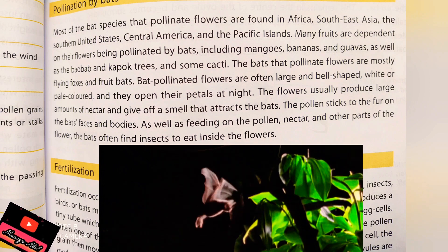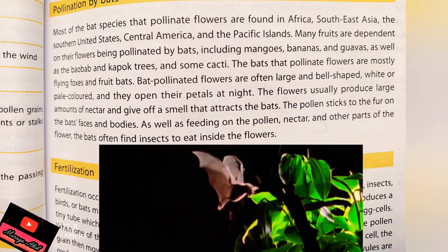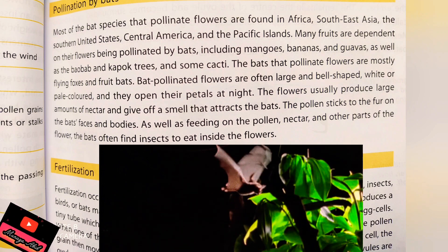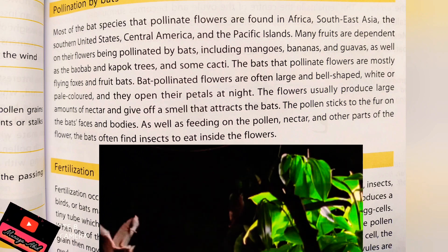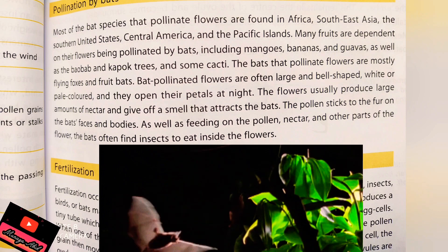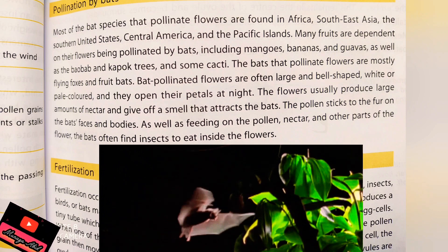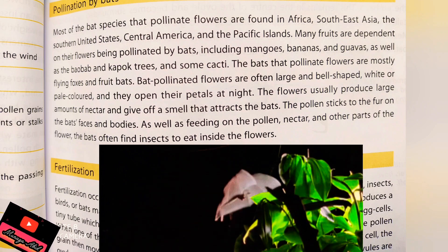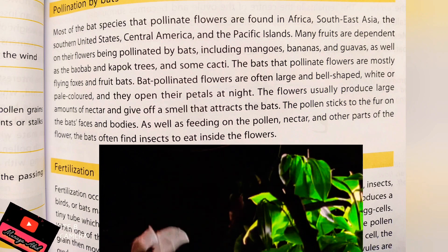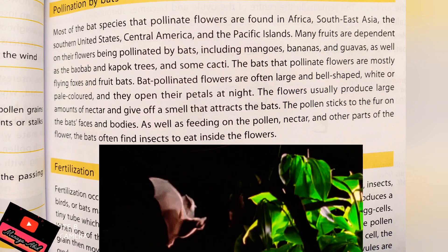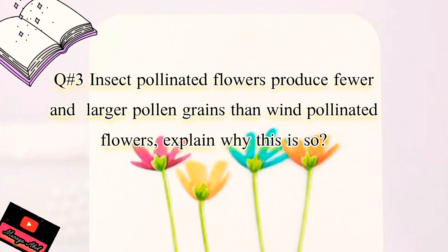This bat from National Geographic Wild is coming to flowers and pollinating them. Bat-pollinated flowers are often large and bell-shaped, white or pale colored, and they open at night. These flowers produce large amounts of nectar and give off a smell that attracts bats. The pollen sticks to the fur of the bat's face and body, and as it feeds, it transfers pollen to other flowers.